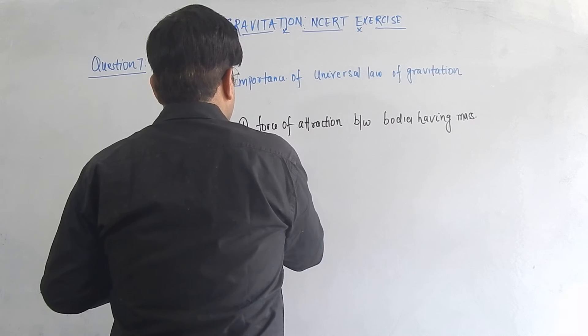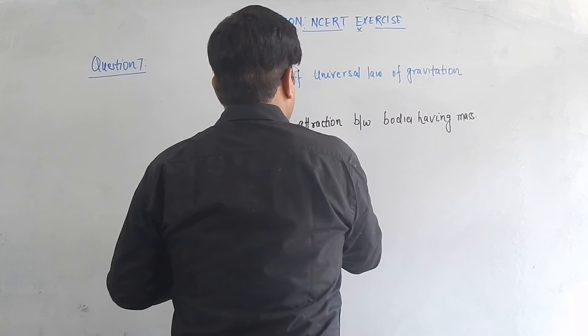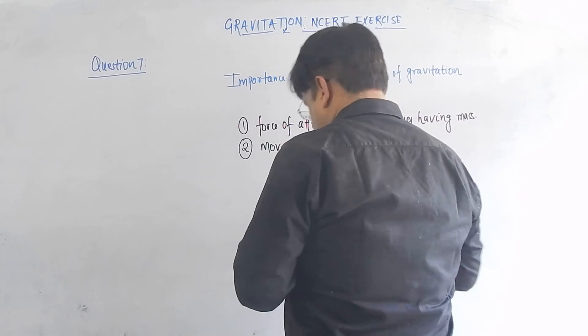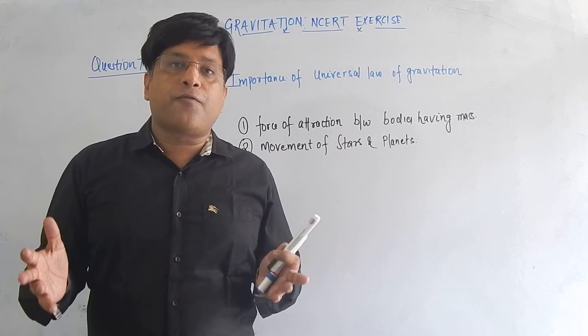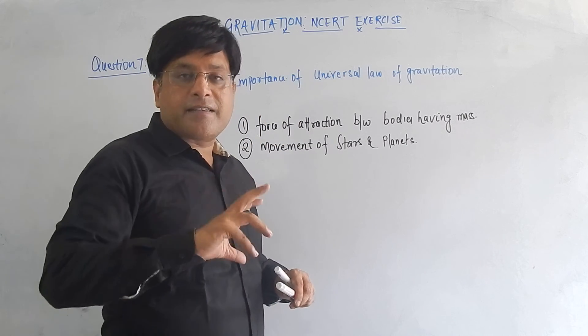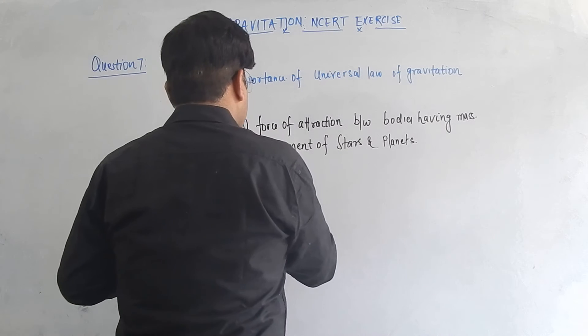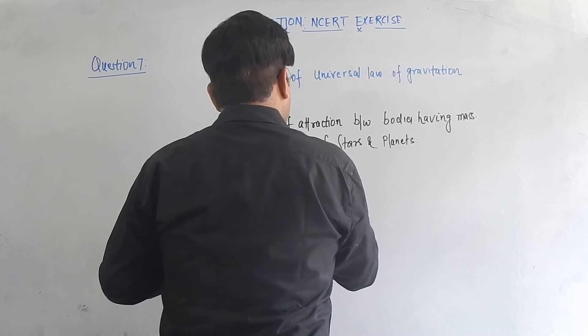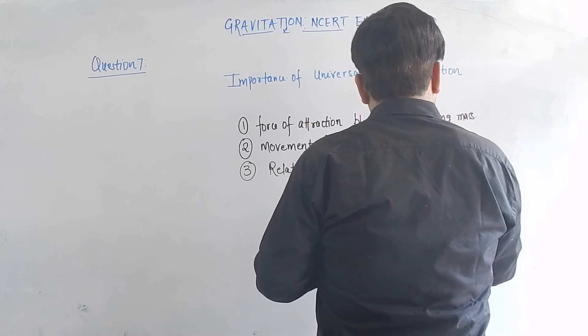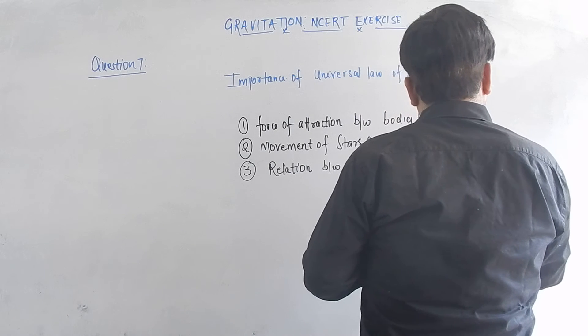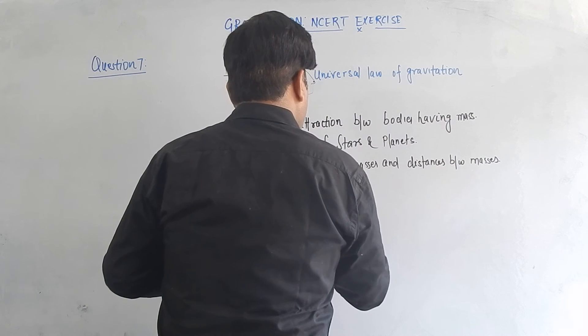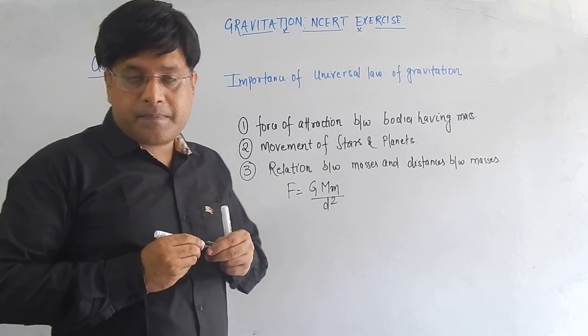The movement of stars and planets. How does the force change? What is the behavior, whether it is attraction or repulsion? The relation between masses and distances. The equation is F equals G times M times m divided by d squared.